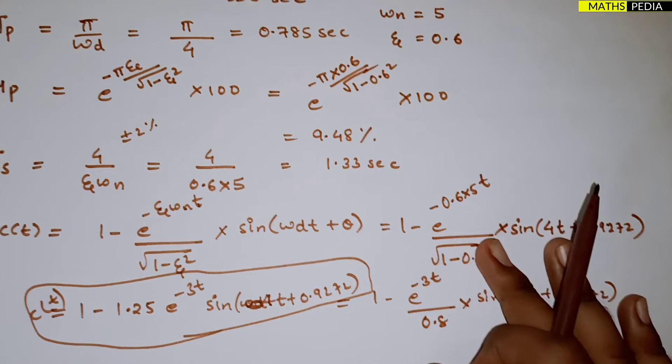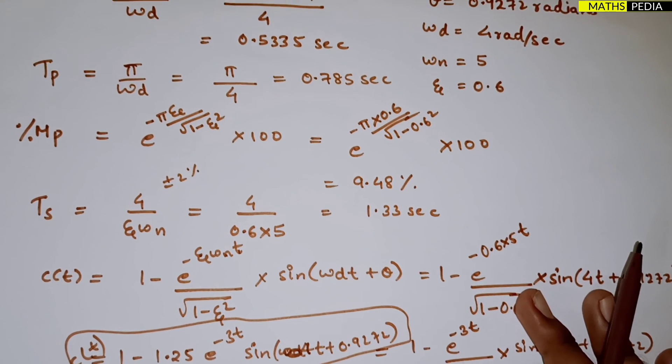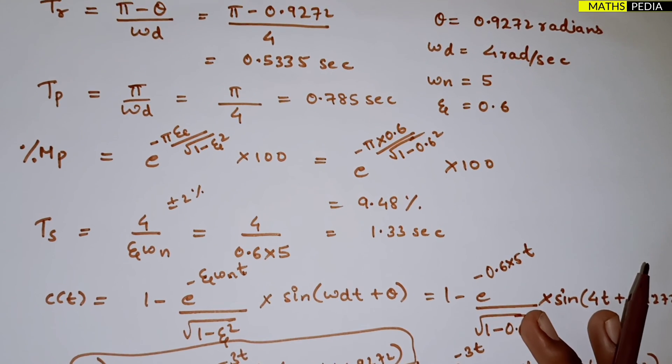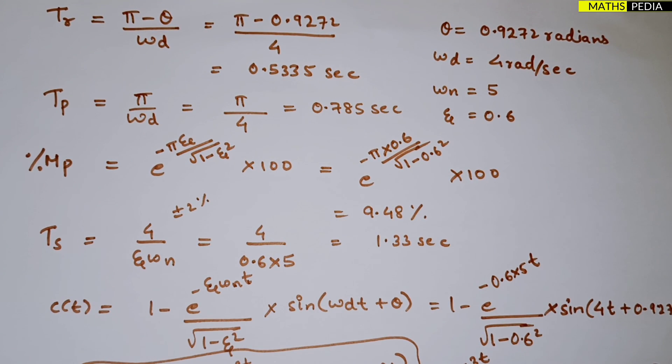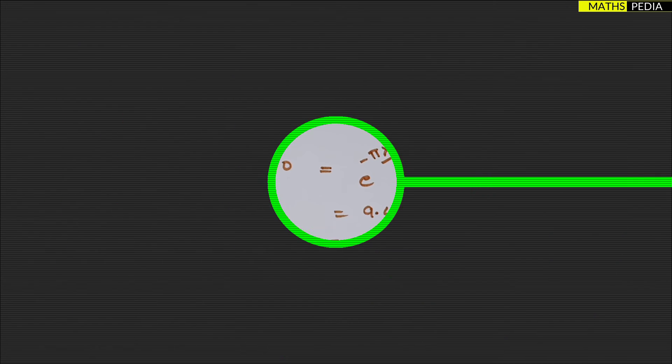So this is the final answer. We have found out all the transient specifications: peak time, rise time, peak overshoot, settling time, and the output response c(t).